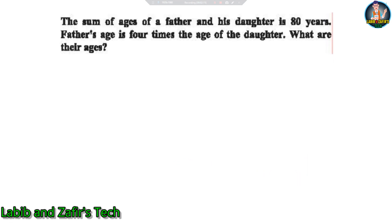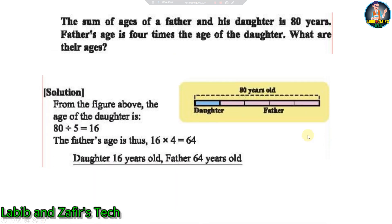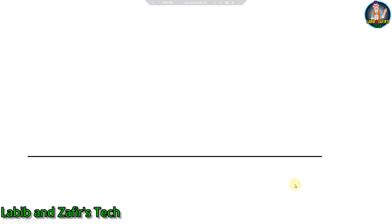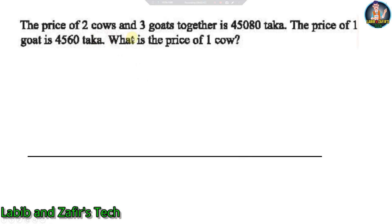Next problem: The sum of ages of a father and his daughter is 80 years. The father's age is 4 times the age of the daughter. What are their ages? Solution: The daughter's age = 80 ÷ 5 = 16 years. The father's age = 16 × 4 = 64 years. Answer: Daughter 16 years old, Father 64 years old.